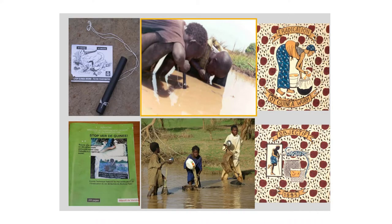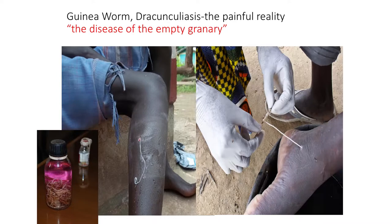The name of guinea worm in Bambara in Mali is 'the disease of the empty granary' — people were disabled, they couldn't harvest the crops, so they went hungry the following year. The other innovation is health education — this is an exercise book from Burkina Faso, and every primary school child had that exercise book. It cost very little to print on the cover how you avoid guinea worm and how you report it. Highly effective, absolutely no technical input, and yet it's been one of the most successful eradication programs.